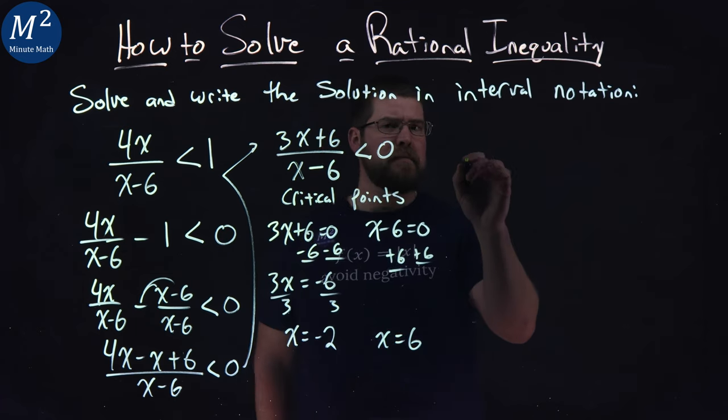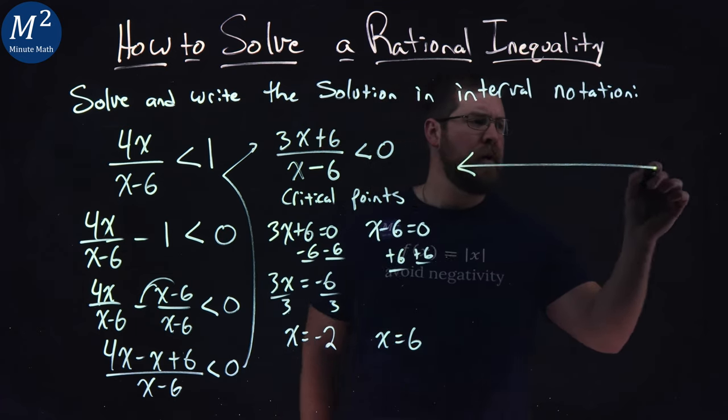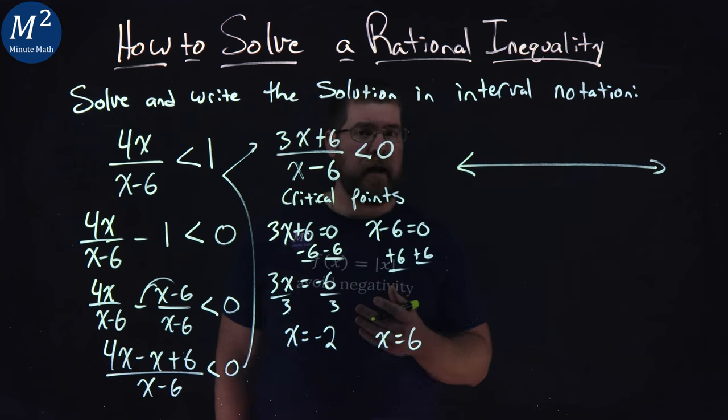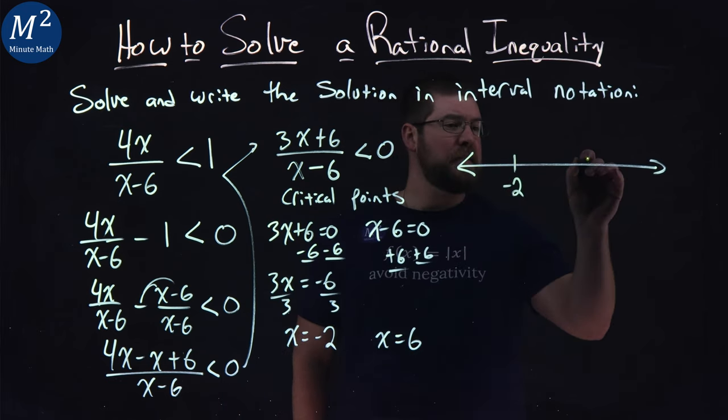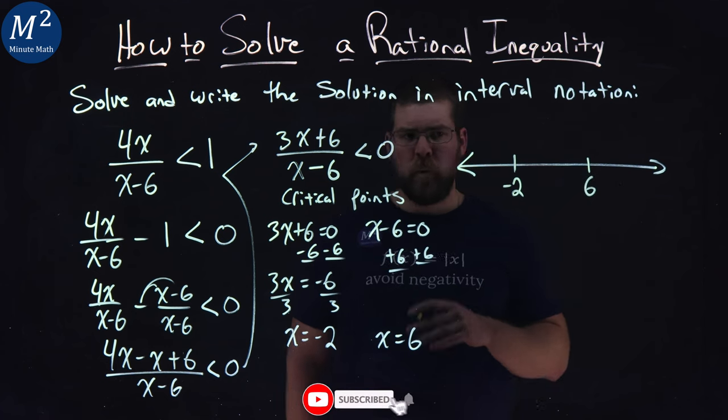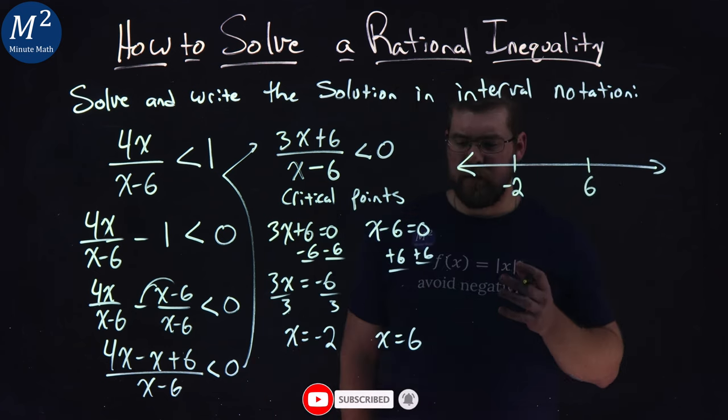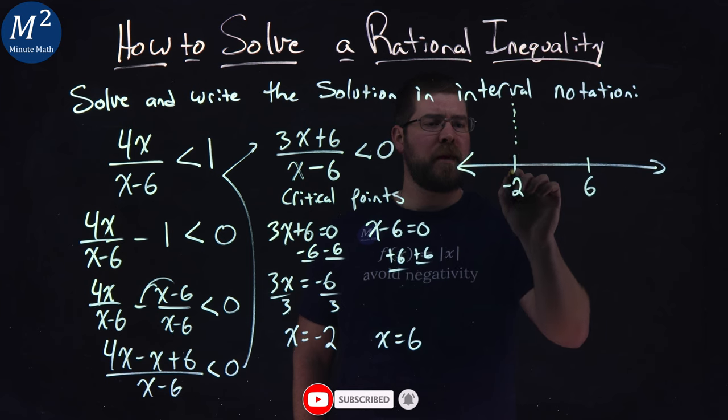So from here, I want to look at a number line. Now, I don't need to write the whole number line out. I'm just going to highlight where negative 2 is and where 6 is, roughly. We don't need to put all the values.